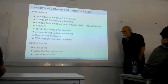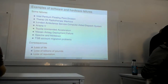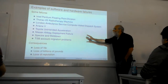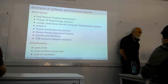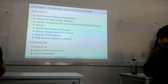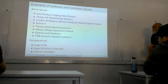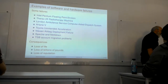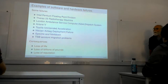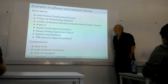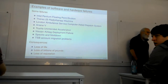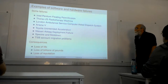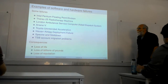A motivation for looking for better methods for specification and design comes from the failures of previous approaches. I've given you a list of some well-known software and hardware failures. Some go back quite a long way — the Intel Pentium Floating Point Division bug is from 1994, which cost Intel an estimated half a billion dollars, and was probably the starting point for Intel taking a serious interest in formal approaches to hardware specification and design.